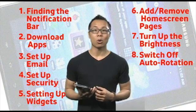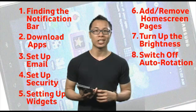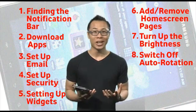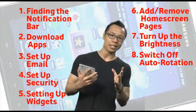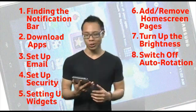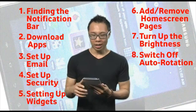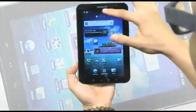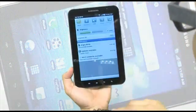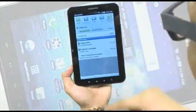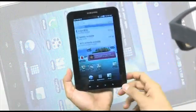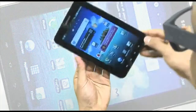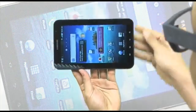Sometimes auto rotation can be a little bit annoying, especially when you're lying down. Here's a really easy way to lock it: simply drag down the notification bar, click Orientation Lock, and that's it.